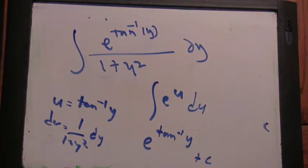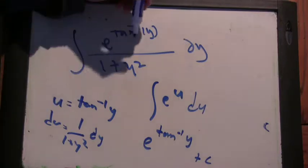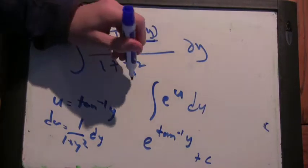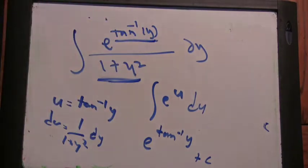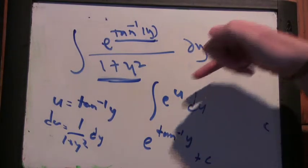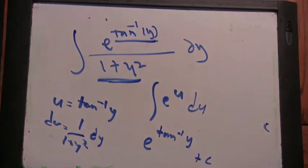So what are the ideas here? Well, you have an arctan up here, and you have arctan's derivative already in the problem. And if we can simplify it to e to the u du, it's easy.